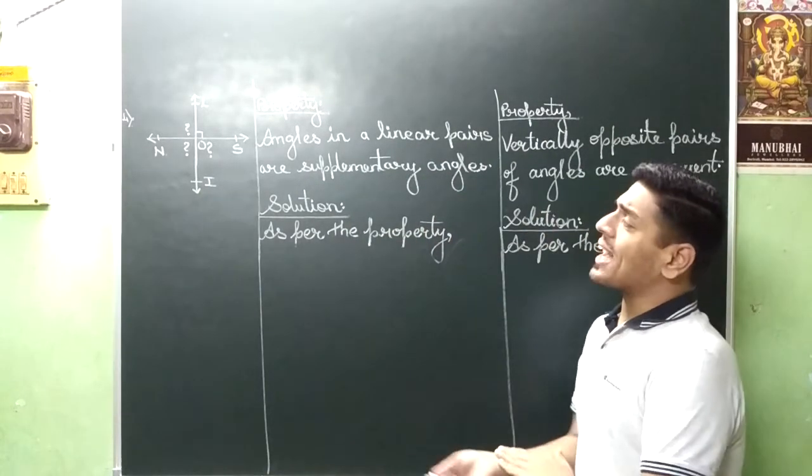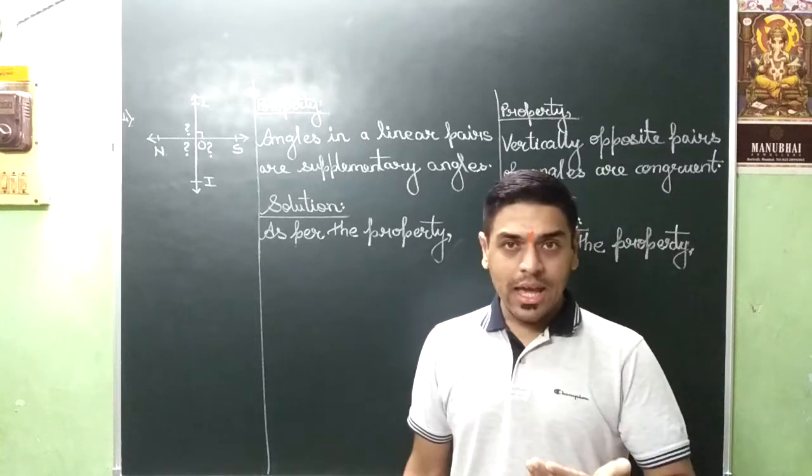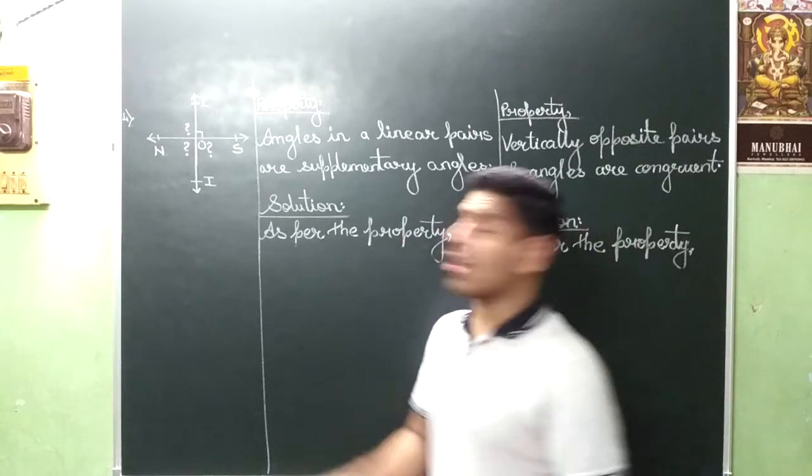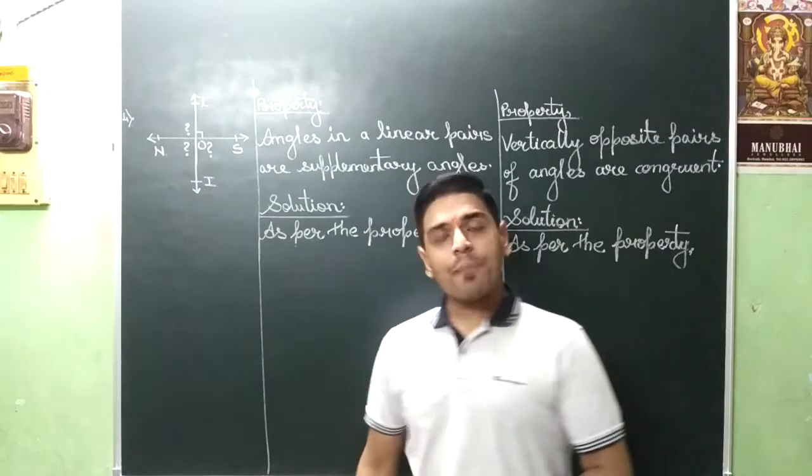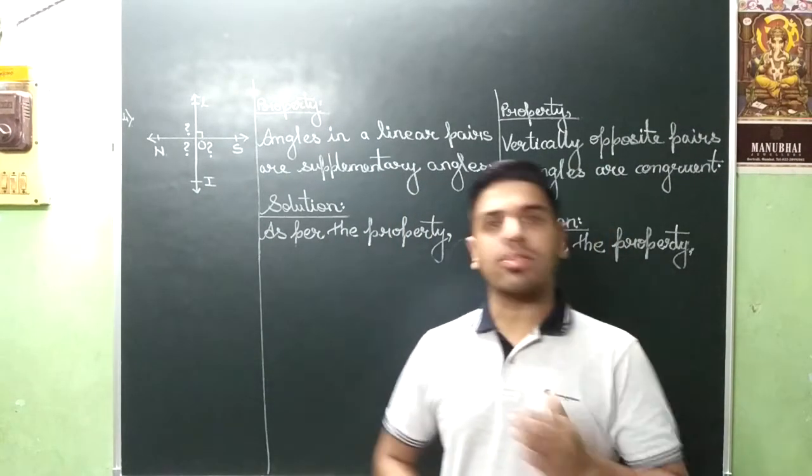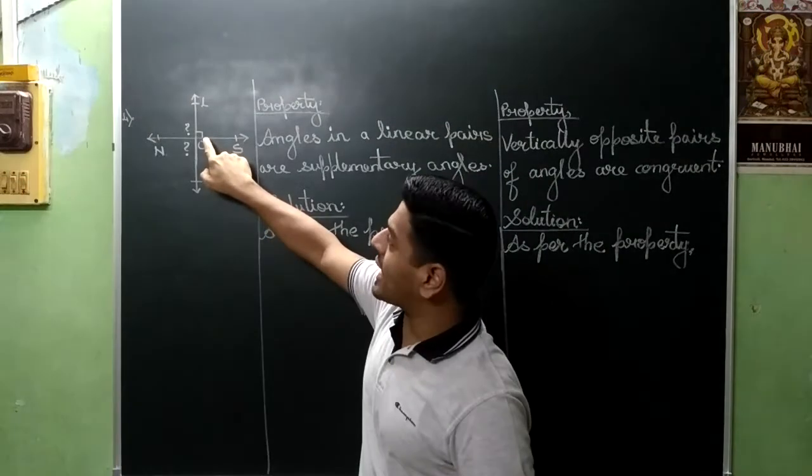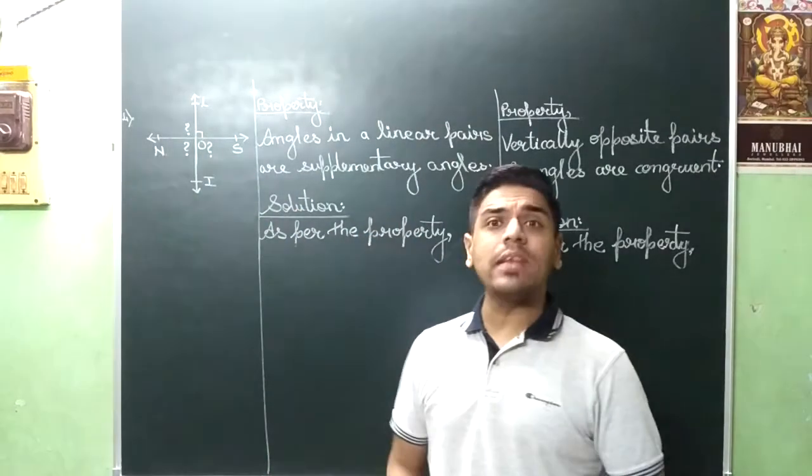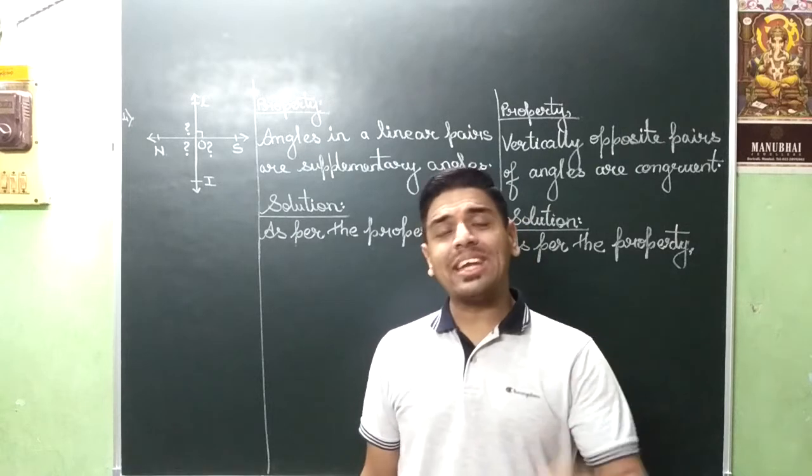Now we have one angle measure here. But if you look at it, I have given it a symbol. So now we are going to consider standard 6. I have kept on repeating that this symbol means right angle and right angle means 90 degree.